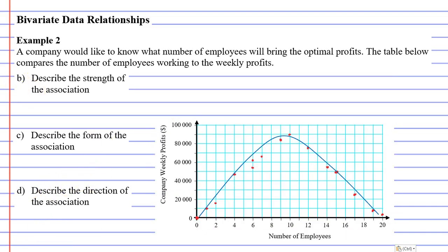Question B says describe the strength of the association. If we look at this you'll notice that the points are quite close to our curve here. There's only a few that veer off. I'm going to say that it's a strong association.